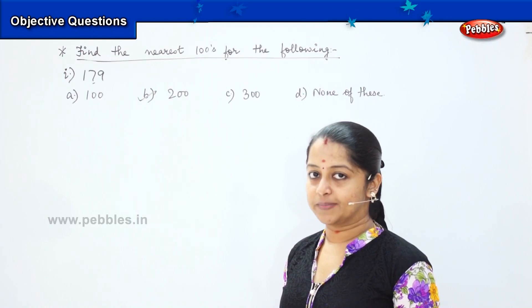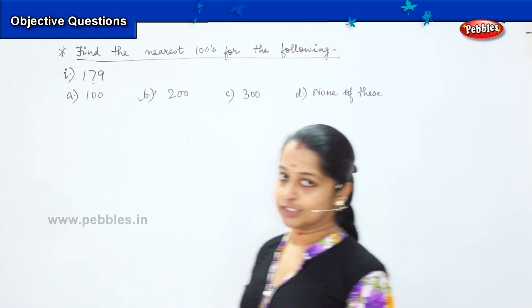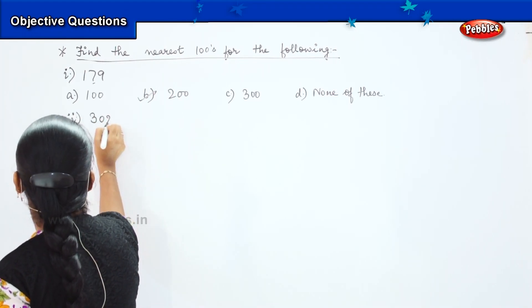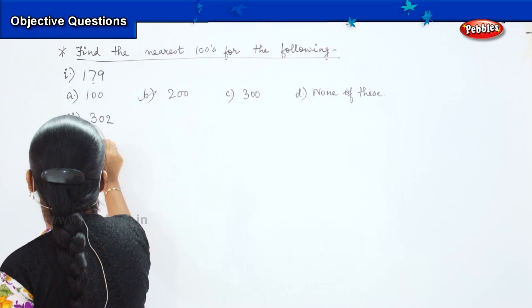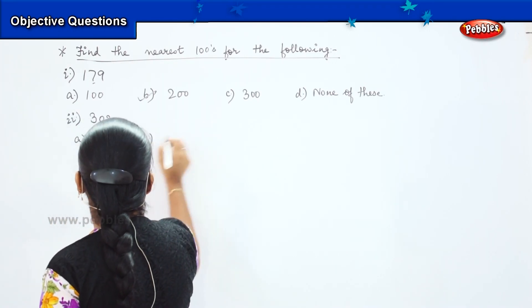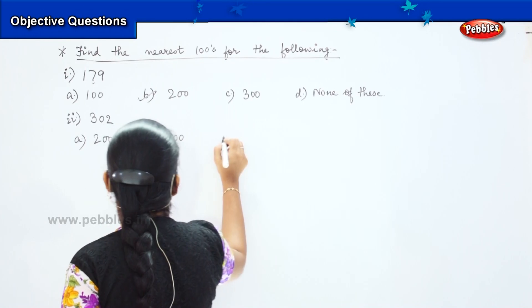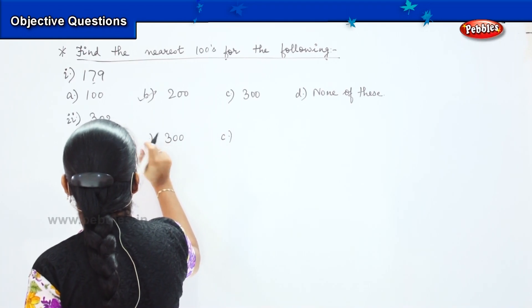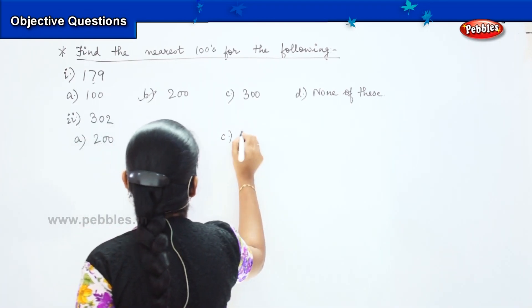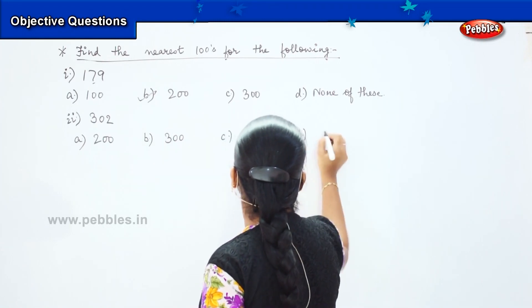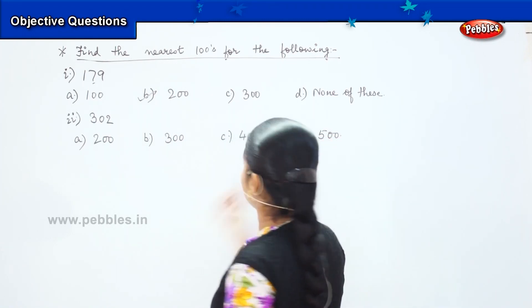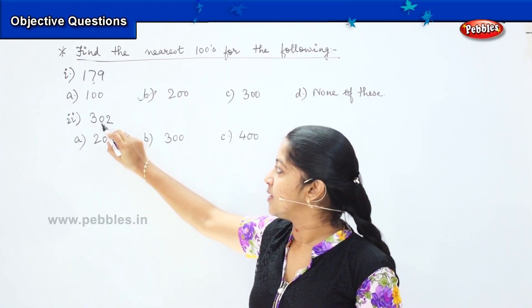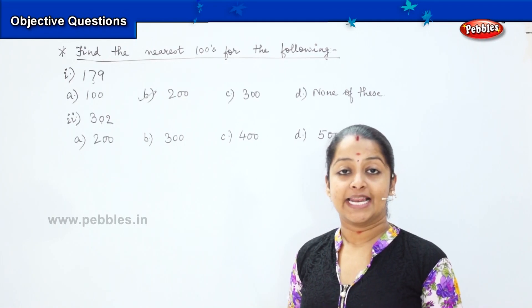Shall we do some more to make the concept clear? Here is your next question. Now you need to round off the number 302 and your answers are 200, 300, 400 and 500. When I am saying 302, what is my tens value? It is 0 which is again less than 5.